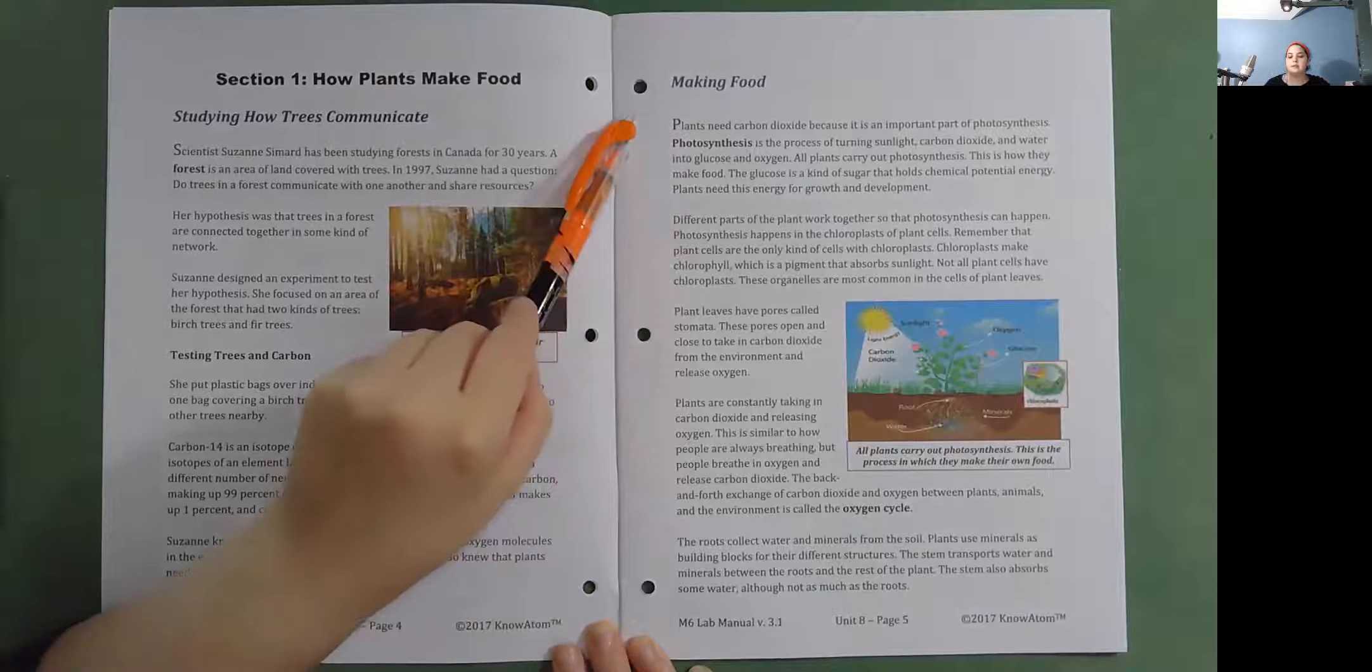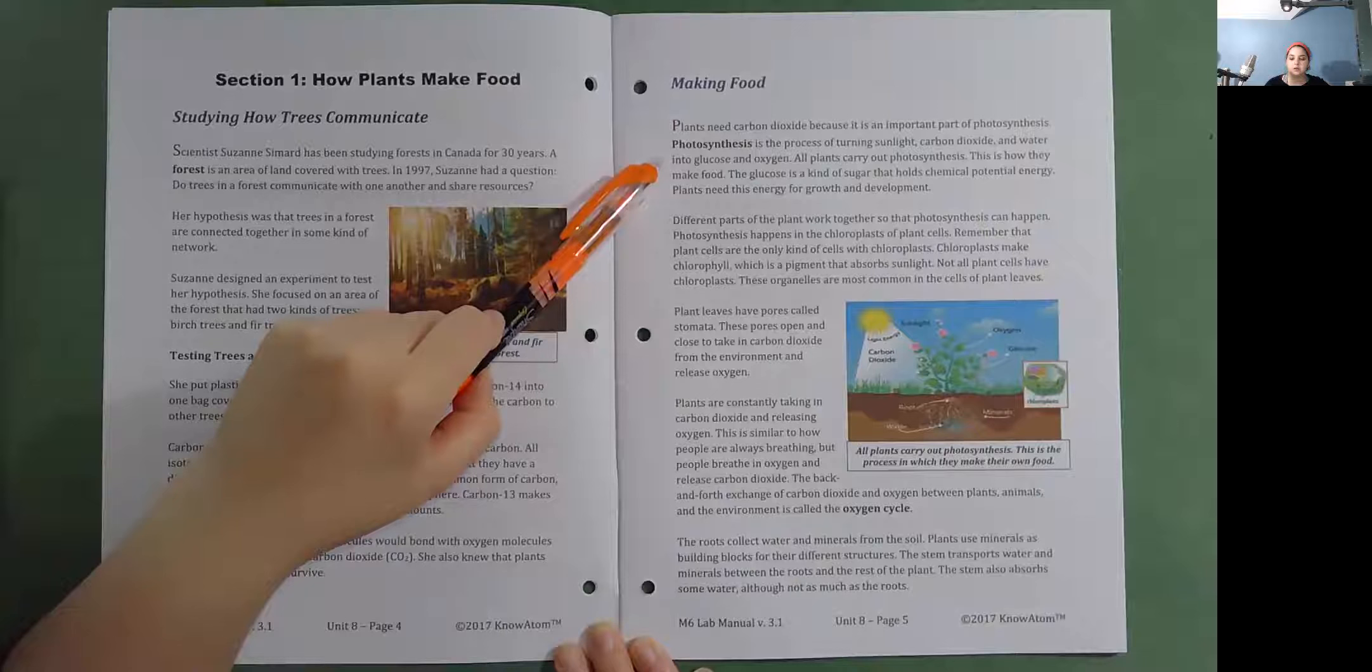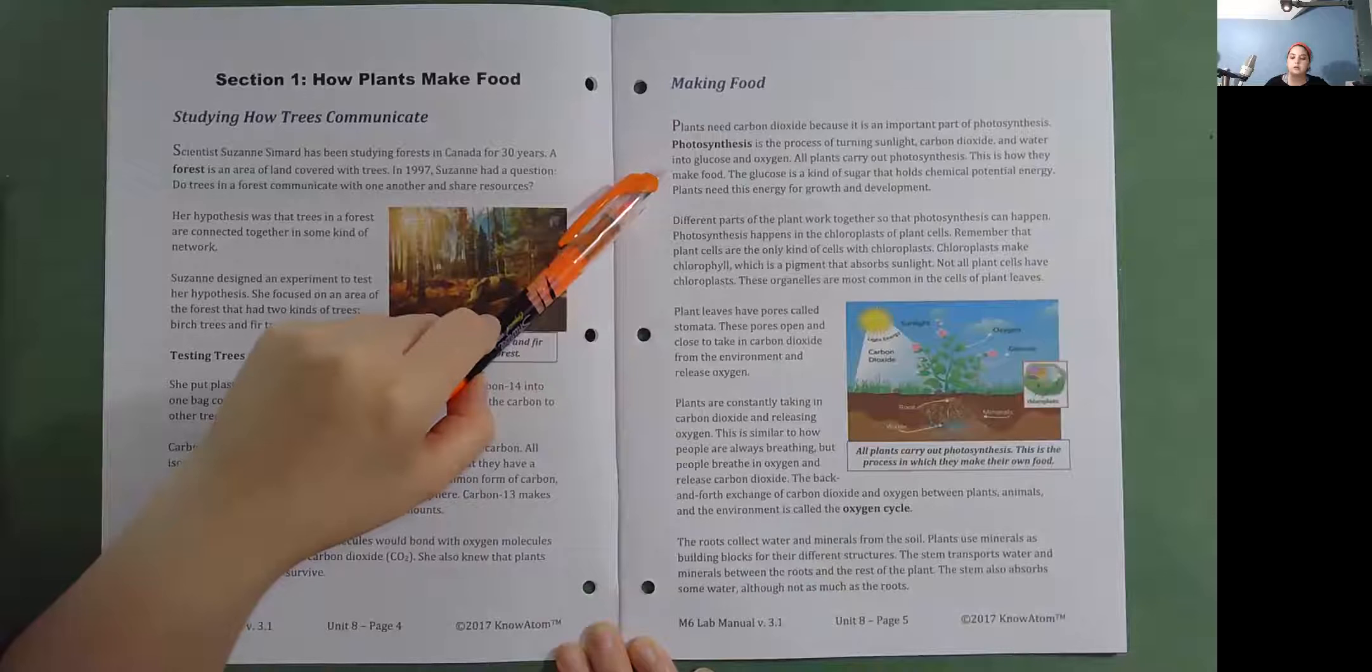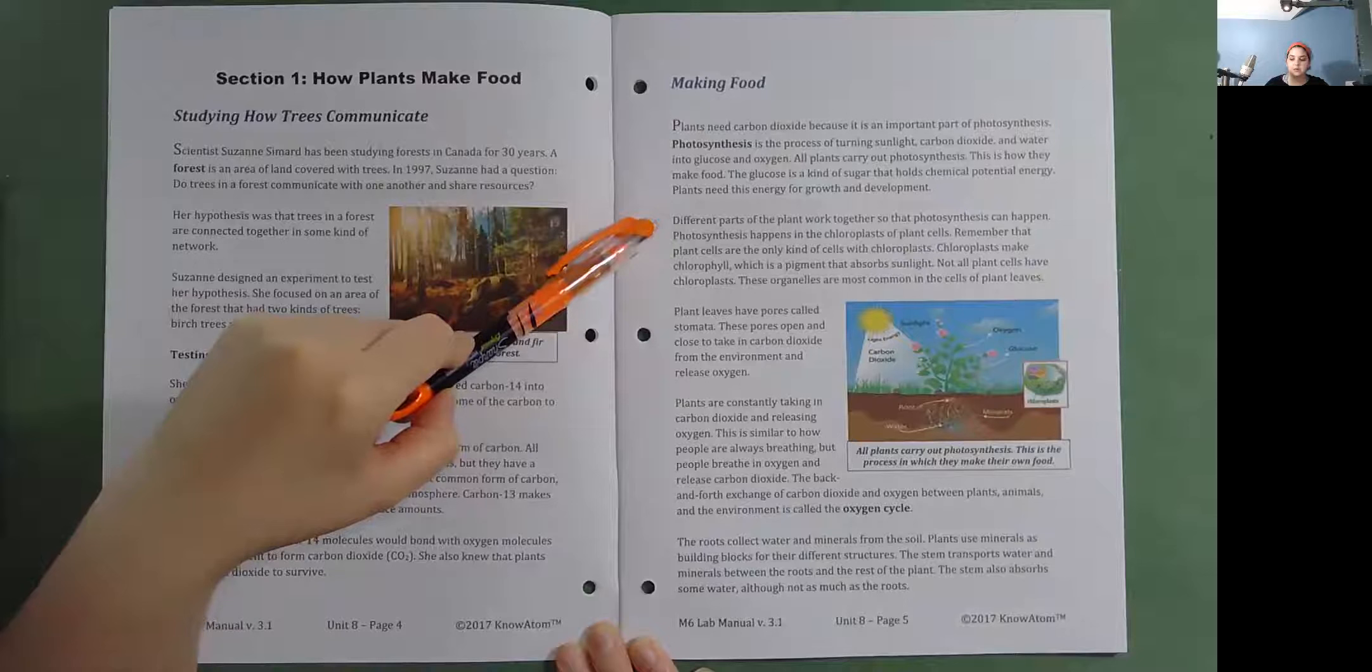Making food. Plants need carbon dioxide because it is an important part of photosynthesis. Photosynthesis is the process of turning sunlight, carbon dioxide, and water into glucose and oxygen. All plants carry out photosynthesis. This is how they make food. The glucose is a kind of sugar that holds chemical potential energy. Plants need this energy for growth and development.